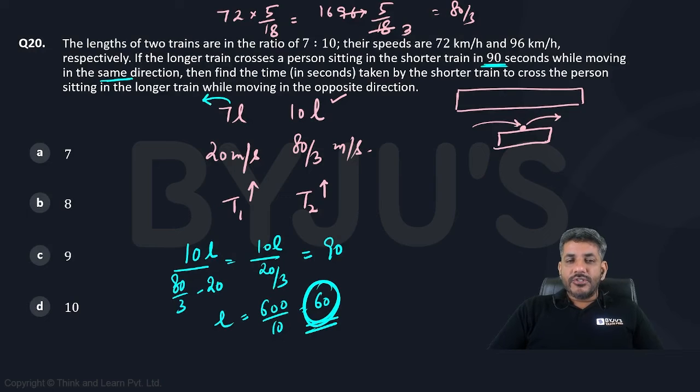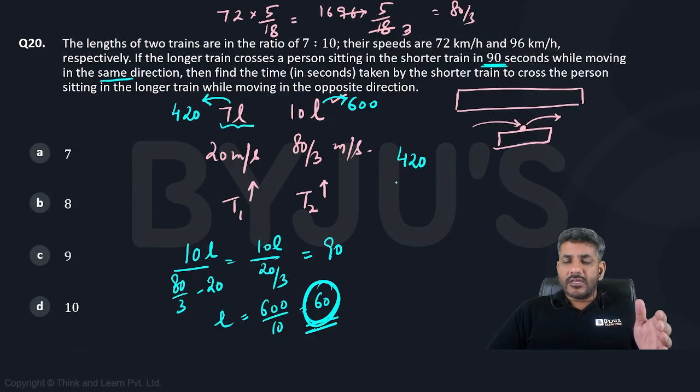That means shorter train has a length of 420, longer train has a length of 600. Moreover, what is the question asking? Find the time taken by the shorter train now to cross the person in the longer train. So this time we have to cover 420 length. The shorter train has to cover its own length of 420. At what speed?